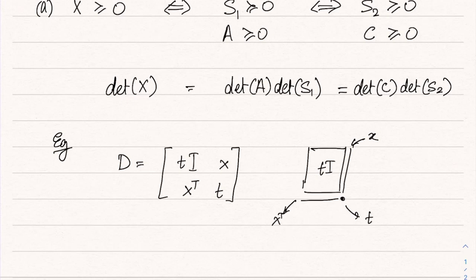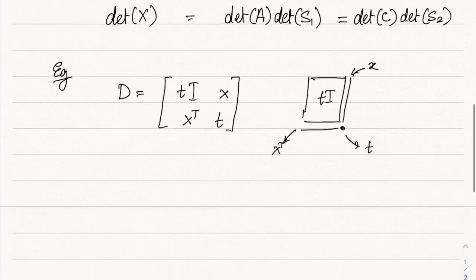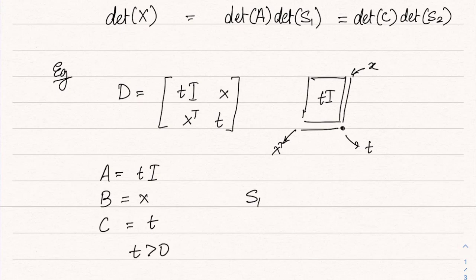So this is a special case of block decomposition of D where we have taken all but one of the rows and columns into the first matrix and that is simply a scalar multiple of identity. So in other words, if we apply the Schur complement result, we would require that A is t times identity, B is x and C is t.